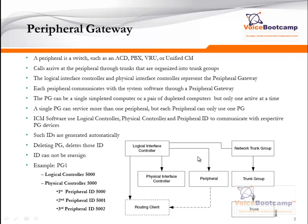Here is an example of a PG-1 with a logical controller 5000 and physical controller 5000. The first peripheral ID is also going to be 5000, but the subsequent peripheral IDs that are created will increment based on what was last created. It doesn't necessarily mean it will be 5001, 5002 — it depends on which order they are created.